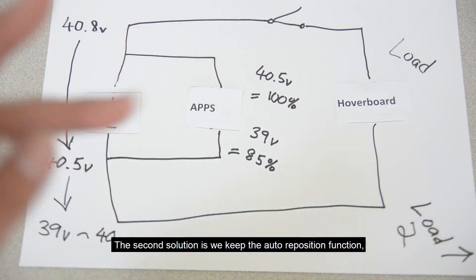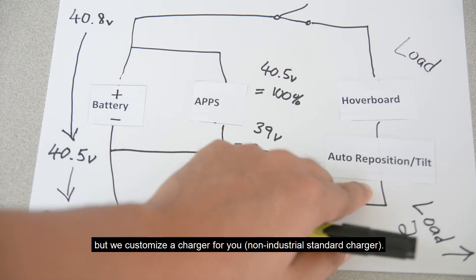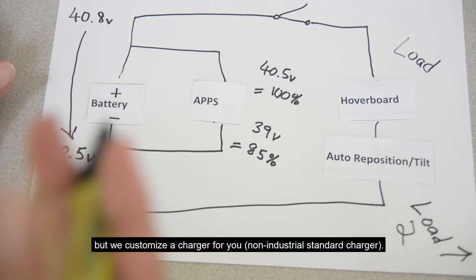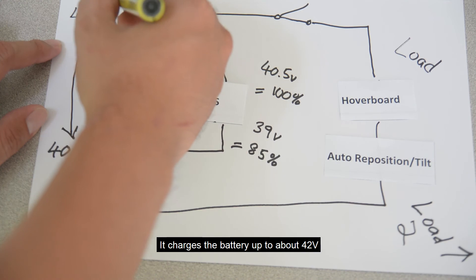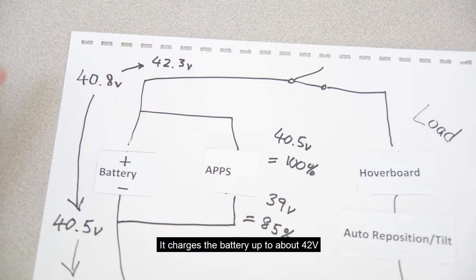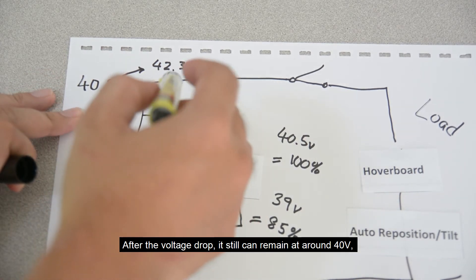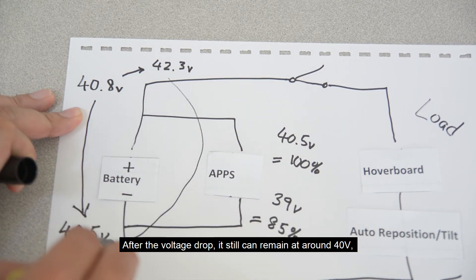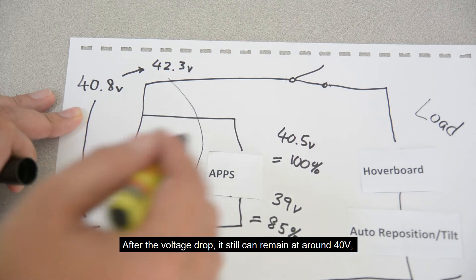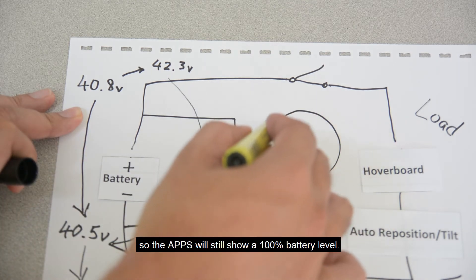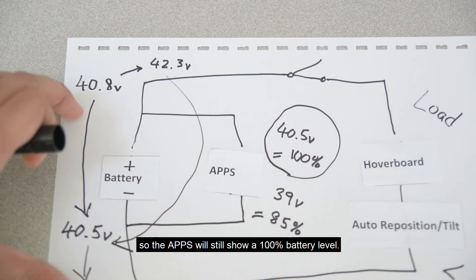The second solution is we keep the auto-reposition function, but we customize a charger for you. It charges the battery up to about 42V. After the voltage drop, it still can remain at around 40V. So the apps will still show a 100% battery level.